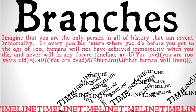For one big example, imagine that you are the only person in all of history who can invent immortality. In every possible future where you die before you get to the age of a hundred, humans will not have achieved immortality when you die, because clearly you die and never will in any future timeline. We can represent that as: in all future timelines, it's not the case that you live until you are 100 years old, which implies that it's not the case that for any future timeline there is any point in the future such that you are dead and there exists some human such that for all moments in the future of that timeline, that human will live.